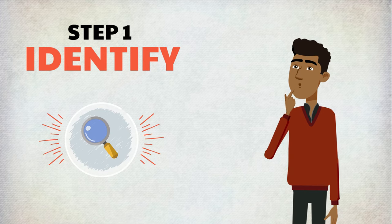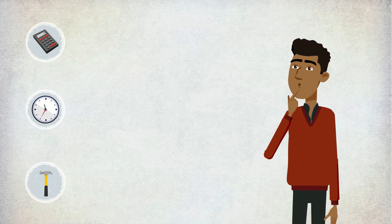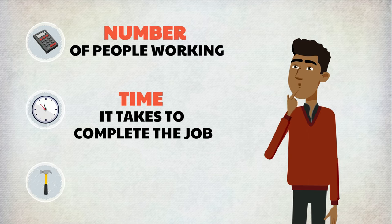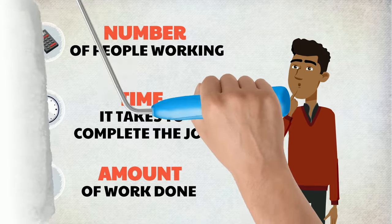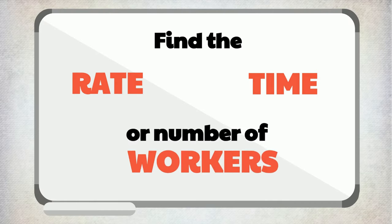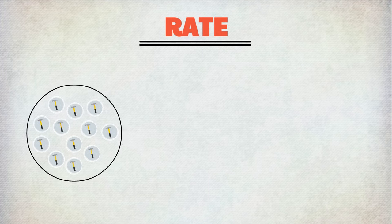The first step in solving these problems is to identify them. You'll know it's a work problem by spotting the three variables involved: the number of people working, the time it takes to complete the job expressed in minutes, hours, or days, and the amount of work done. You'll be asked to either find the rate, time, or number of workers based on the data provided.